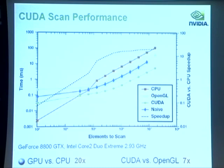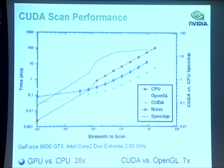The performance measurement is just for scan itself, because in some cases it's used as a building block in a larger algorithm where data is already on the GPU. In Monte Carlo for example, if you need to keep all intermediate samples along a path, you could do your computation on each sample and then do a scan — though that's a somewhat artificial comparison to sequential summation.